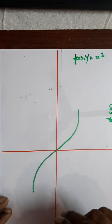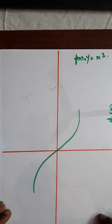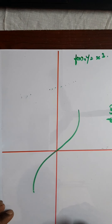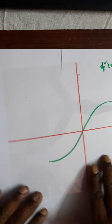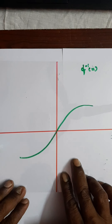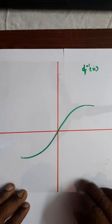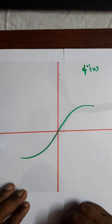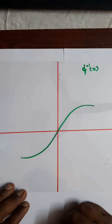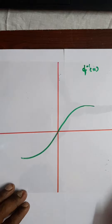f(x) = y = x³. This is the graph. Rotating 180 degrees and then 90 degrees clockwise gives f inverse of x, which is the graph of the inverse of y = x³. This is the function and this is the graph — easy.